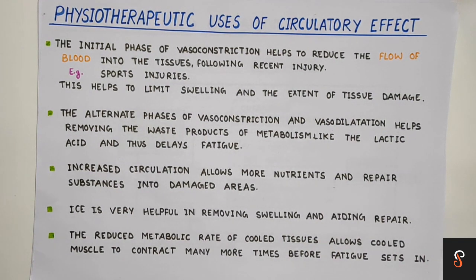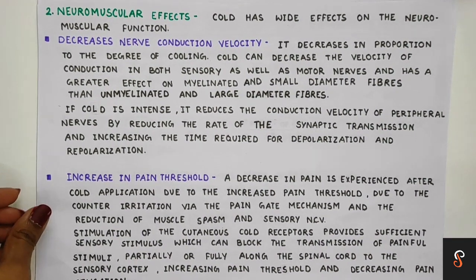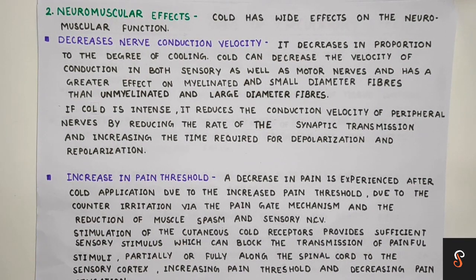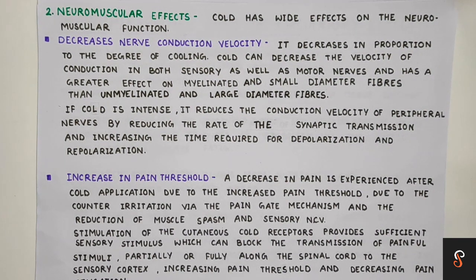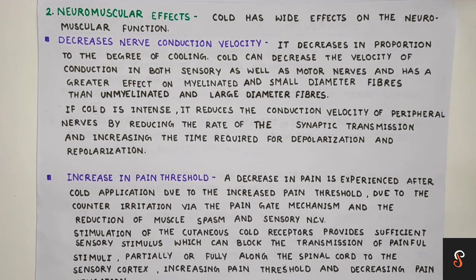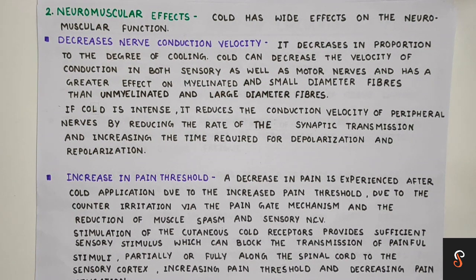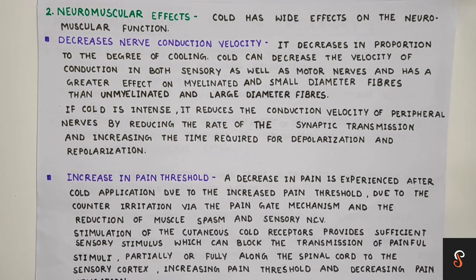Next we will see the neuromuscular effects. Cryotherapy has numerous effects on neuromuscular function. First, it decreases nerve conduction velocity, which is directly proportional to the degree of cooling — the greater the cooling, the greater the decrease in nerve conduction velocity. Cold can decrease the velocity of conduction in both sensory and motor nerves, but has a greater effect on myelinated small-diameter fibers than non-myelinated large-diameter fibers. If cold application is intense, it will decrease peripheral nerve conduction velocity by reducing the rate of synaptic transmission and increasing the time needed for depolarization and repolarization.